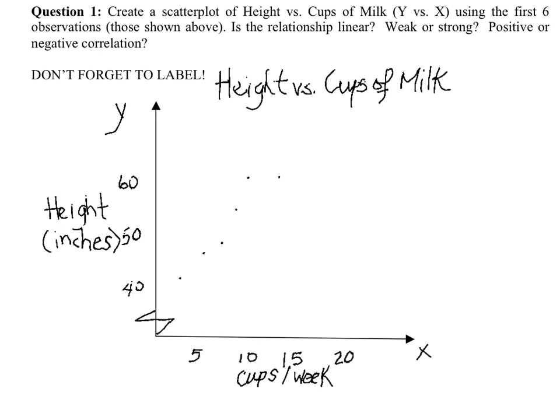I've drawn the scatterplot for the height of children versus the cups of milk they drink per week. Keep in mind that it's not a coincidence that height is the y variable — it always comes first in the statement of the scatterplot. So height is your y versus your x variable, cups of milk.